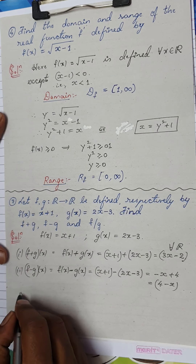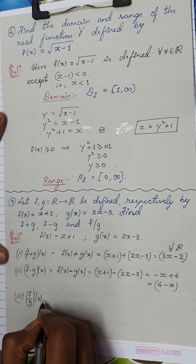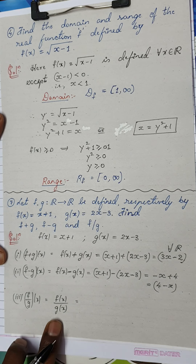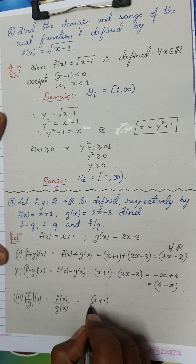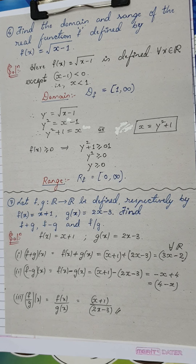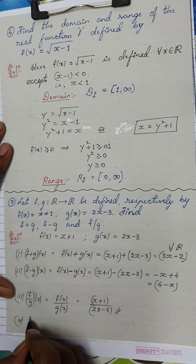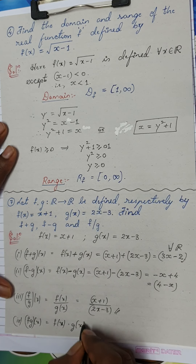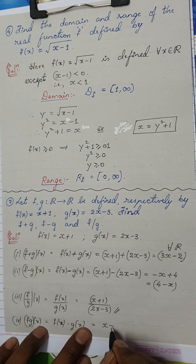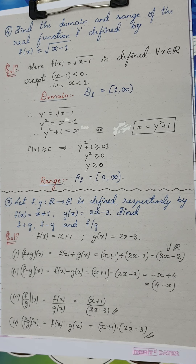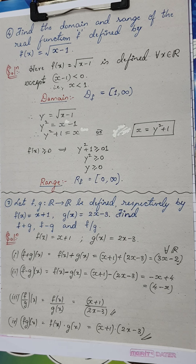For f/g: (f/g)(x) = f(x)/g(x) = (x + 1)/(2x − 3). This cannot be simplified further, so leave it as is. For reference, (f·g)(x) = f(x)·g(x) = (x + 1)(2x − 3), which can be left in factored form or expanded.